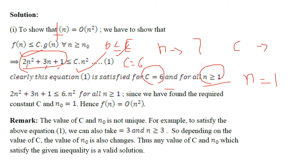If you want to reduce the constant value, suppose you take c = 3. In that scenario, n should be greater than or equal to 3. So for all n ≥ n₀ and that particular value of c, the inequality holds good. This shows that f(n) is basically equal to O(n²).